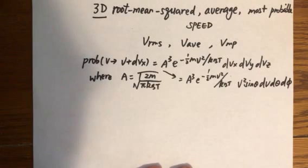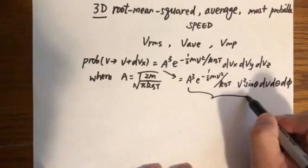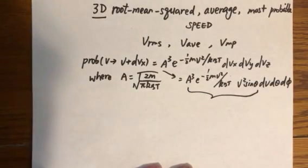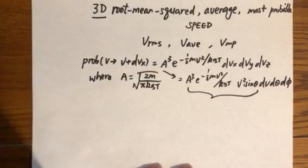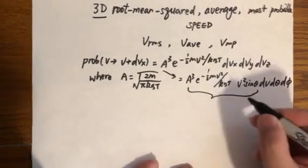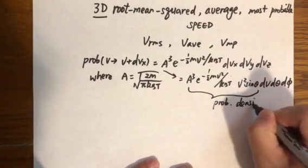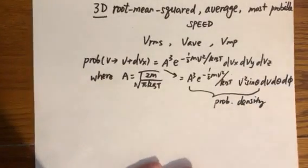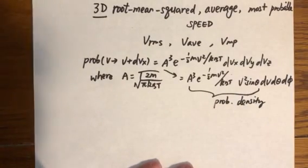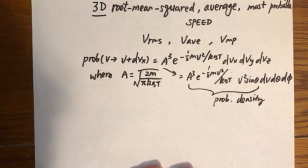Once we have this probability, or if we just look at the function in front of dV d theta d phi, it's probability density. We can easily integrate this probability density with respect to theta and phi.